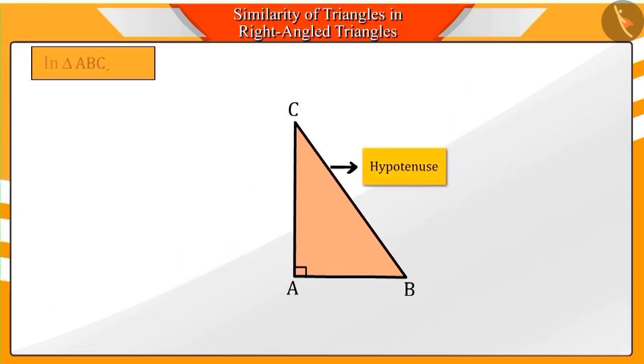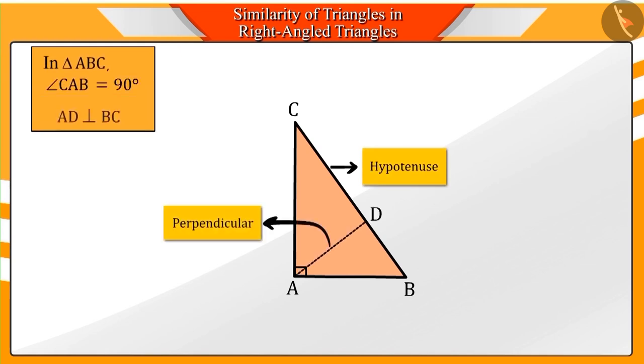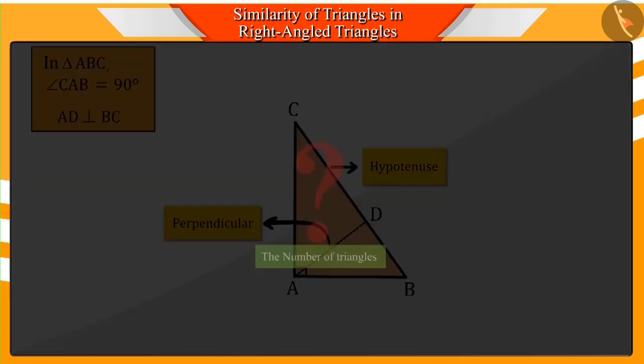If we drop a perpendicular to the hypotenuse BC from the right angle of the triangle which intersects the hypotenuse BC at point D, then how many triangles can you see in this triangle?